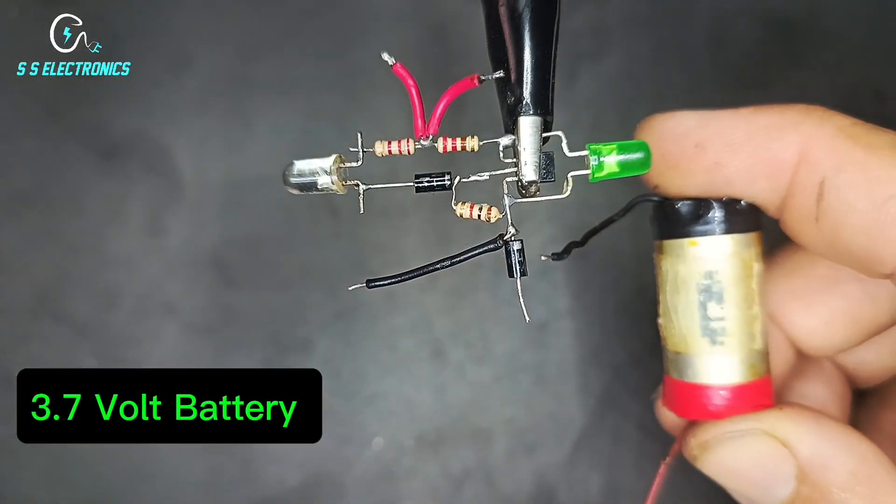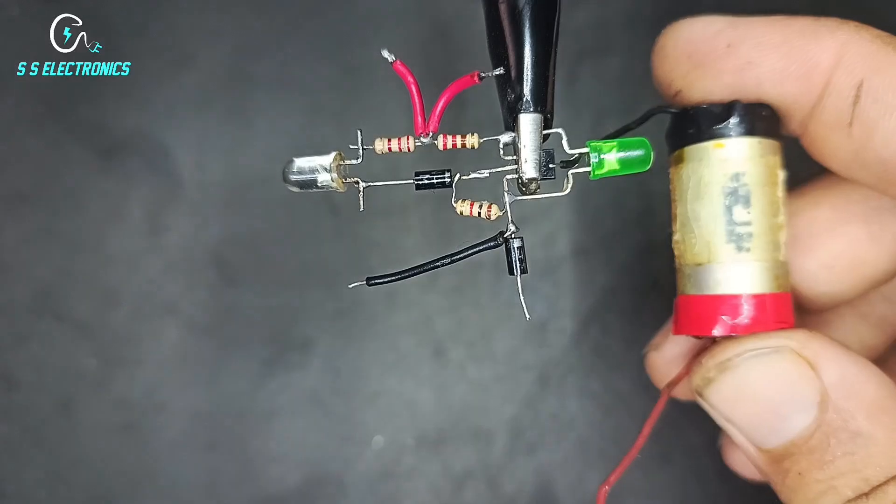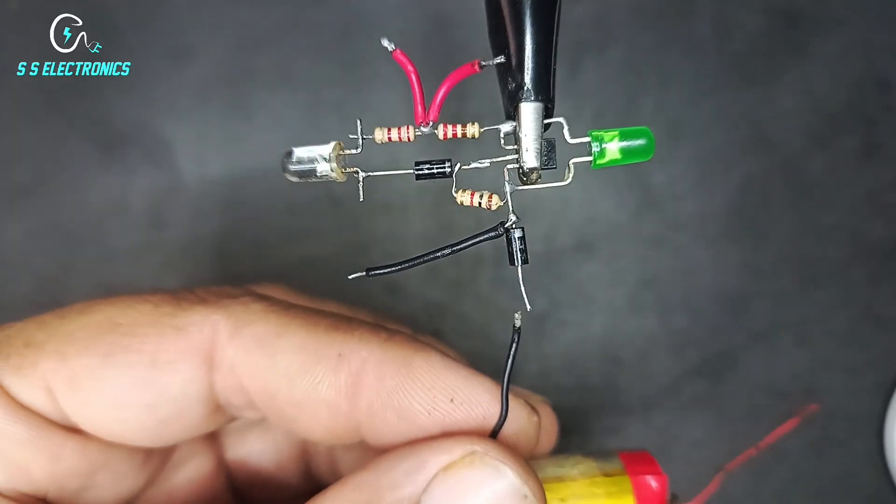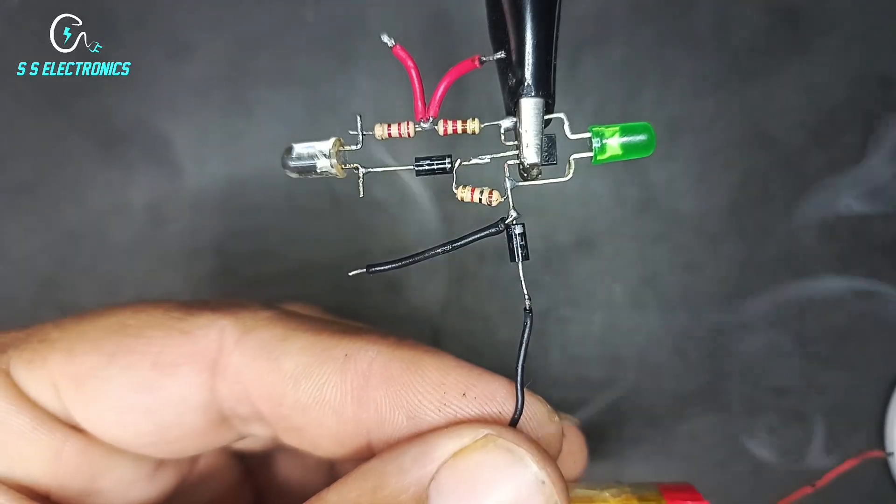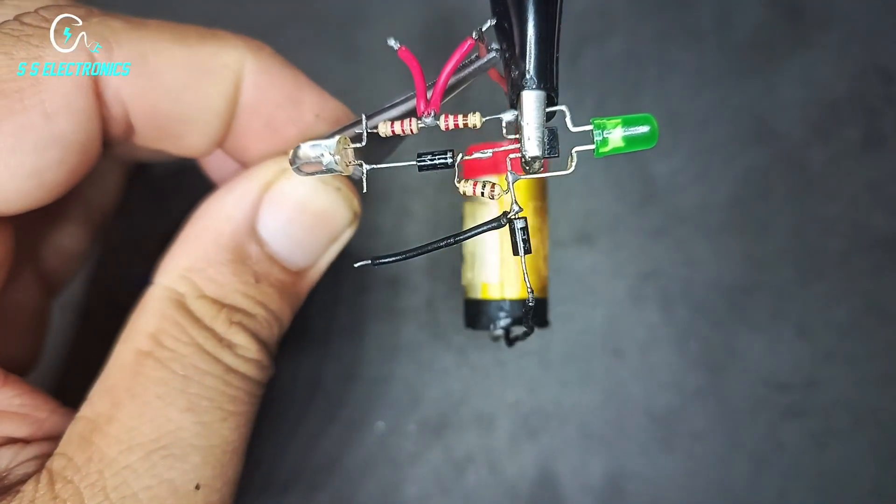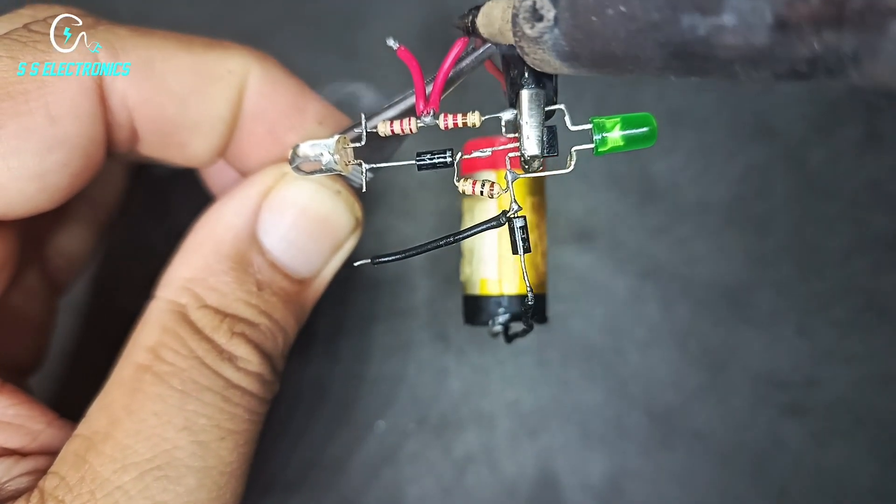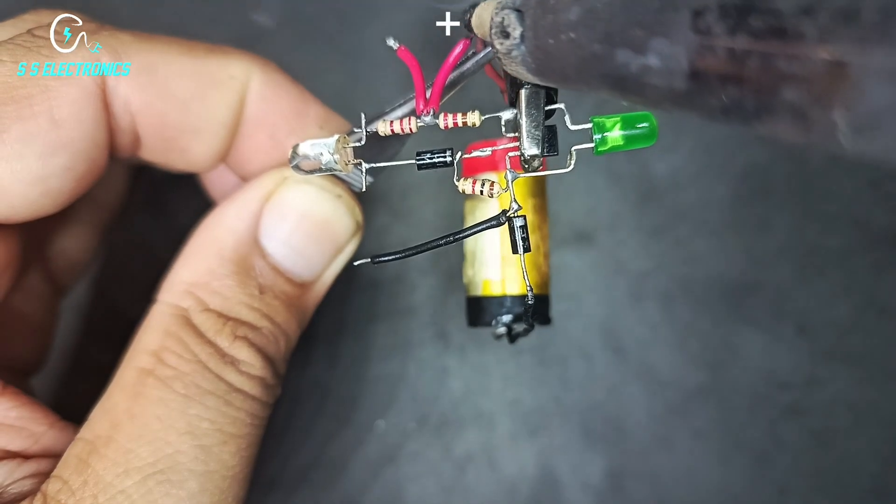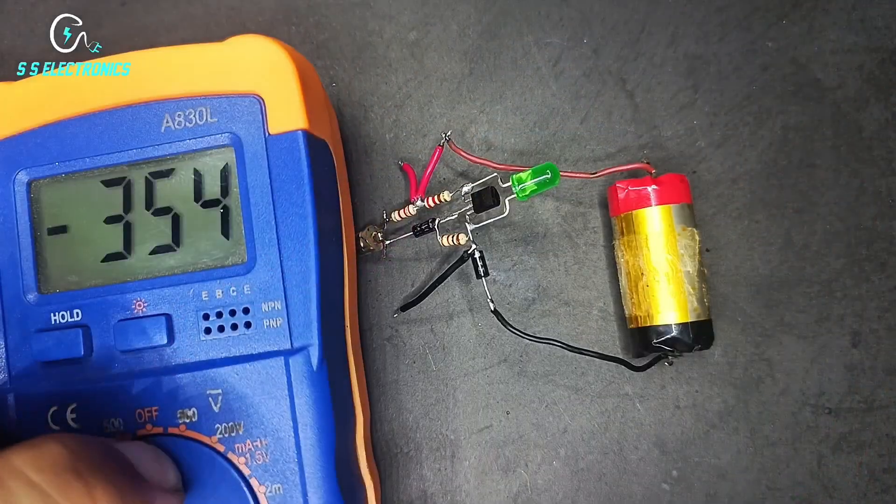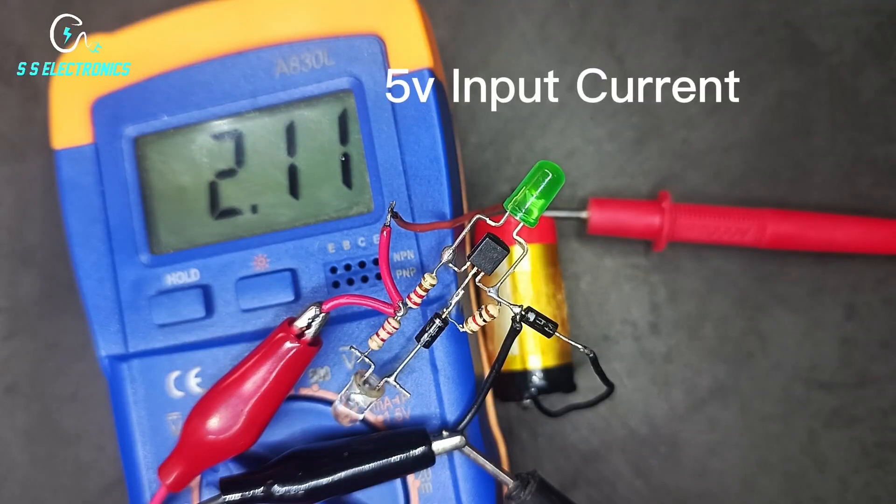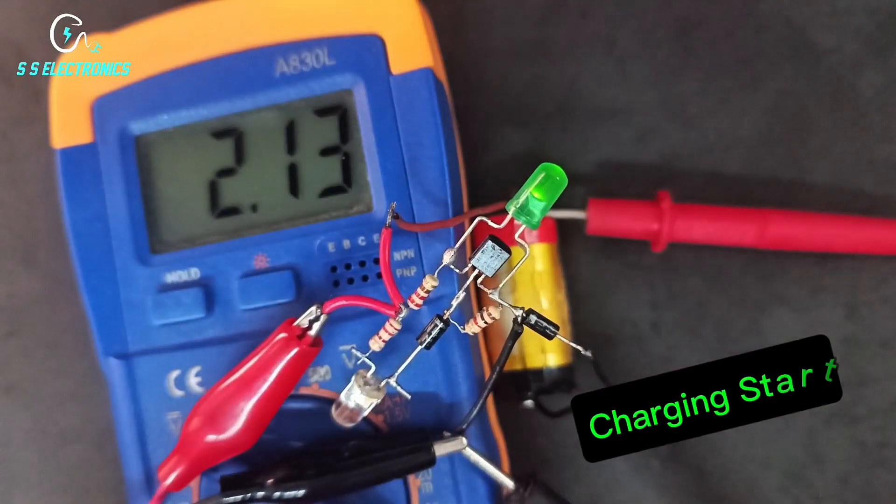3.7 volt battery. Battery negative wire connecting with diode positive side. Diode positive wire connecting with connecting wire. Charging start.